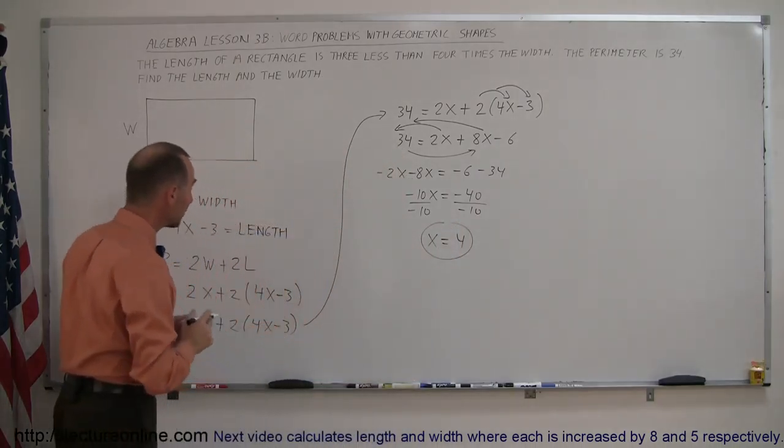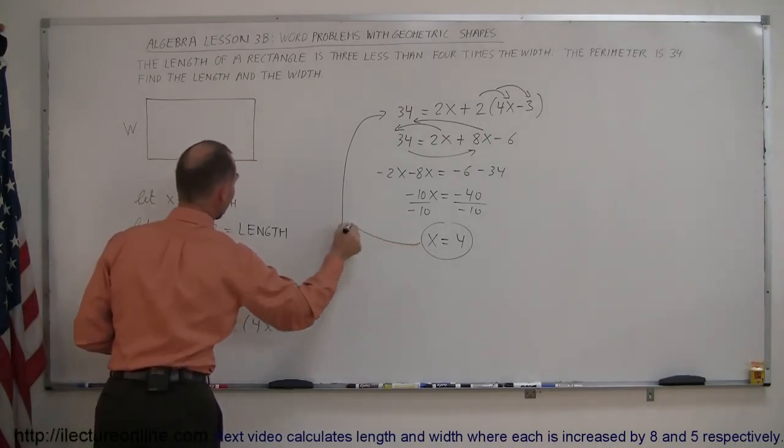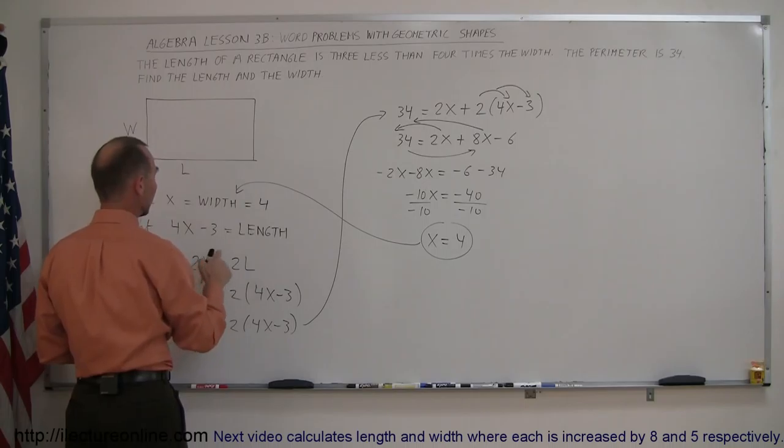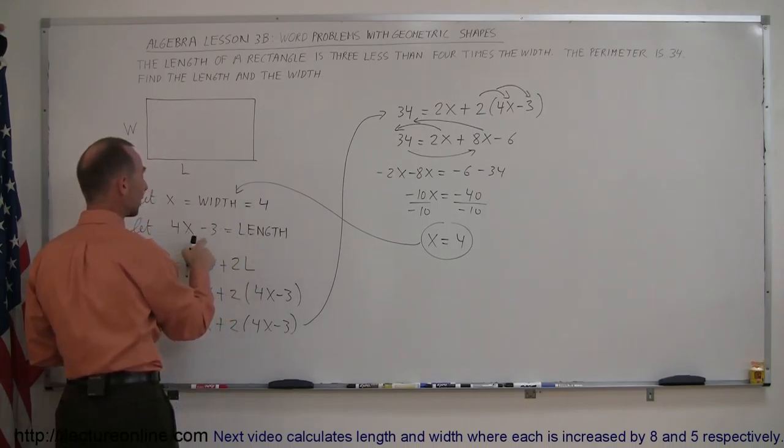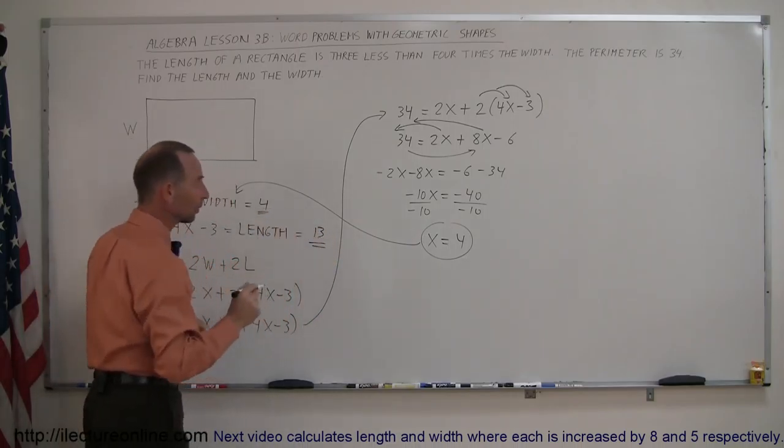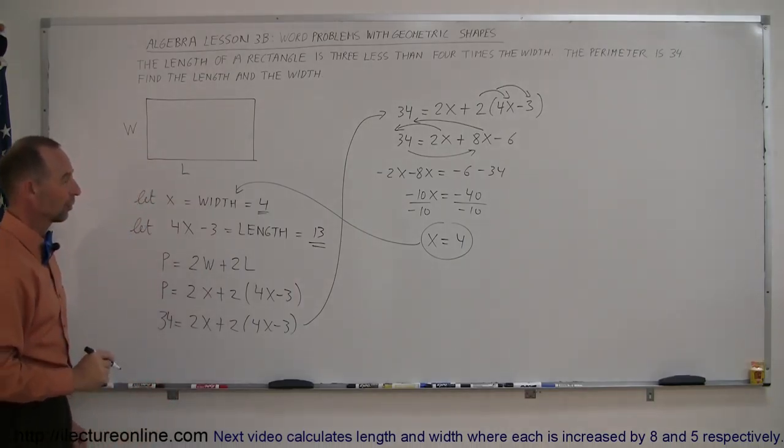Alright, going back to see what that means. We defined the width as x. So we know that the width now is 4. And then, the length is 4 times that minus 3. Well, 4 times 4, that's 16 minus 3, which is therefore 13. And there are the two answers. The width is 4 and the length is 13. That's how you do that.